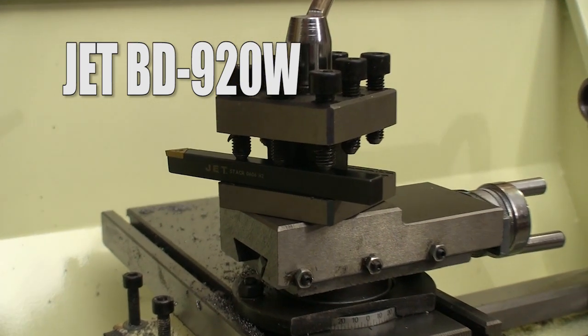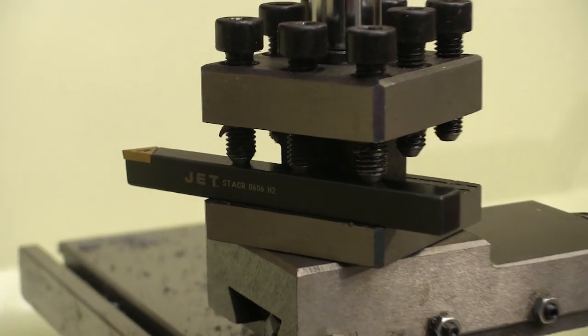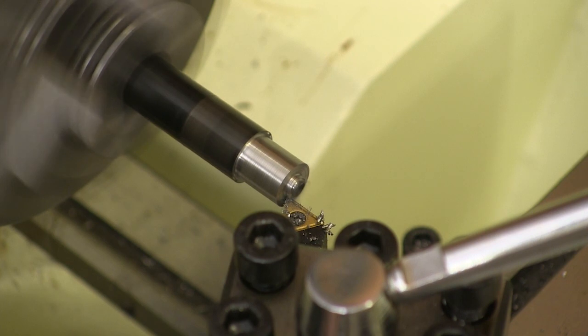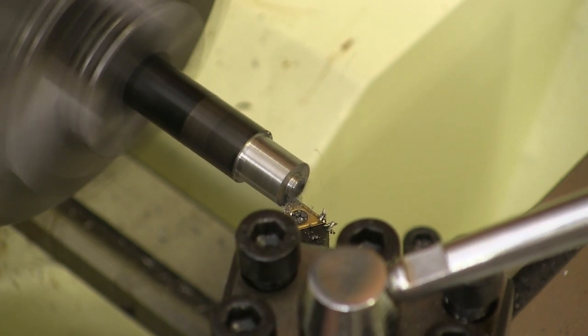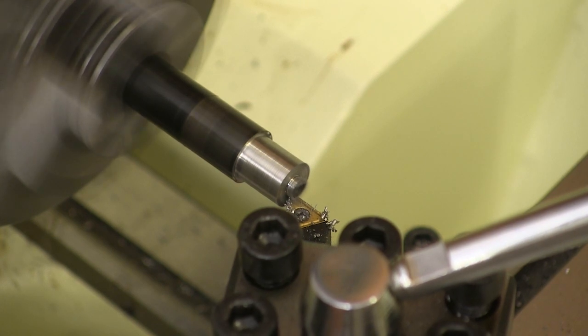When I got my new jet lathe, one of the first issues I ran into is that the cutter height wasn't correct. I found that when I made a face cut, the cutter would leave a nub at the center of the stock, and that meant that the cutter is too low.